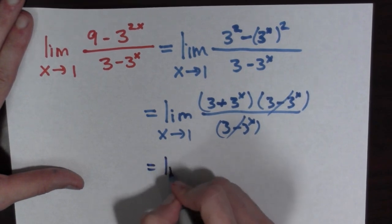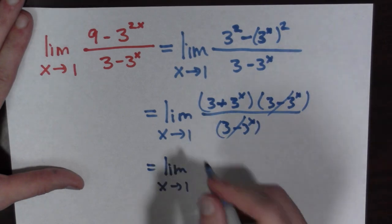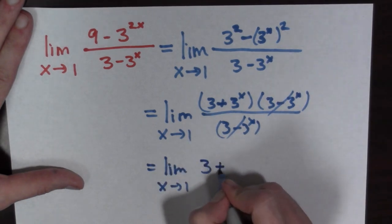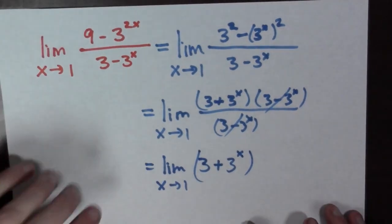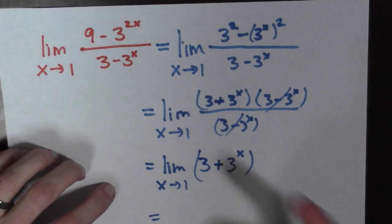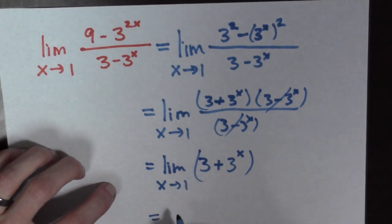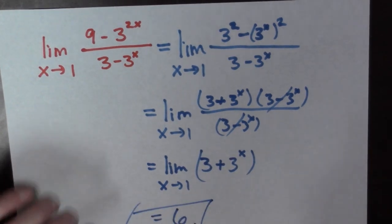This equals the limit as x goes to 1 of 3 plus 3 to the x — the limit is needed here, otherwise these expressions are not equal. Evaluating at x equals 1, we get 3 plus 3 to the 1, which equals 6. There's our final answer. Four examples, done — let's go do some more math.